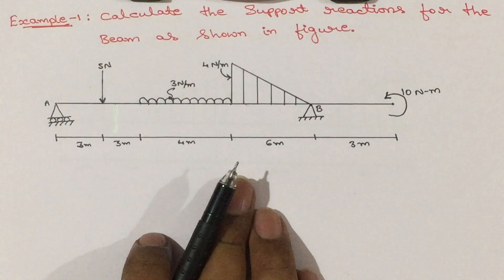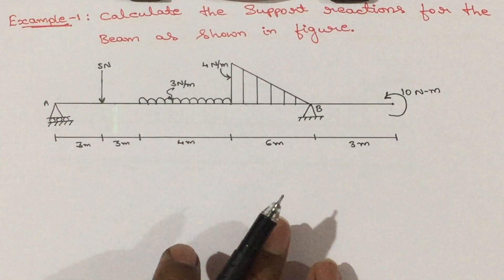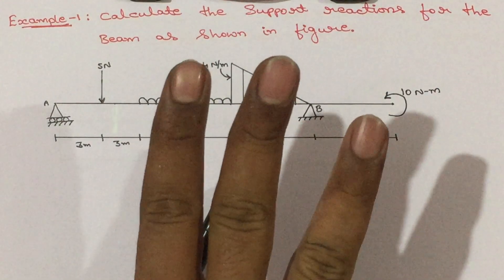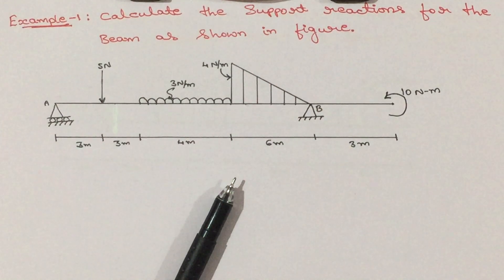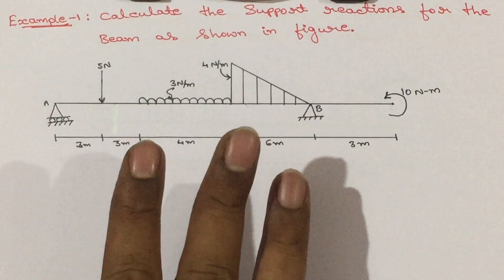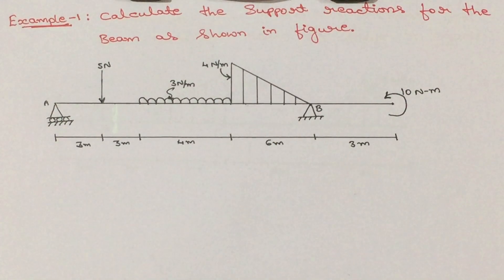What do you mean by statically determinate or statically indeterminate? If we can solve the problem by using three conditions of equilibrium, then we call that one as a statically determinate beam. If we cannot solve the problem by using three conditions of equilibrium, then we call that one as a statically indeterminate beam.